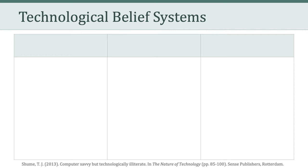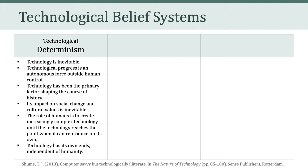I want to go over some of the technological belief systems that Shum touched upon in the 'Computer Savvy but Technologically Illiterate' article we read last week. The first of those belief systems is technological determinism. This is the idea that technology is inevitable. Technological progress is an autonomous force outside of human control, and technological determinism sees technology as the primary factor shaping the course of history. Its impact on social change and cultural values is inevitable. The role of humans is merely to create increasingly complex technology until the technology reaches a point where it can actually reproduce on its own — technology has its own ends independent of humanity.